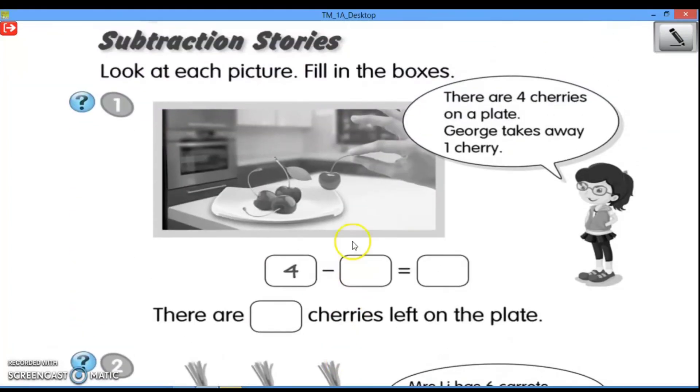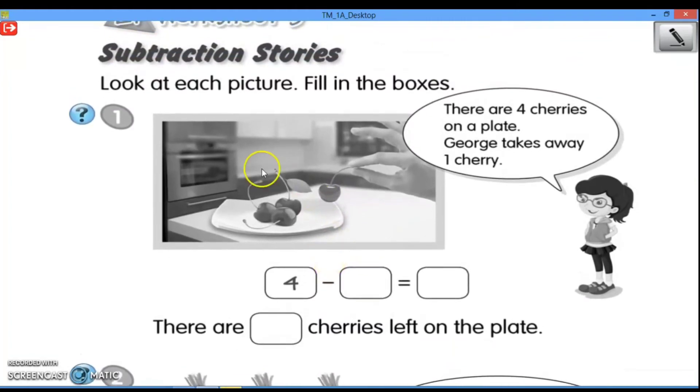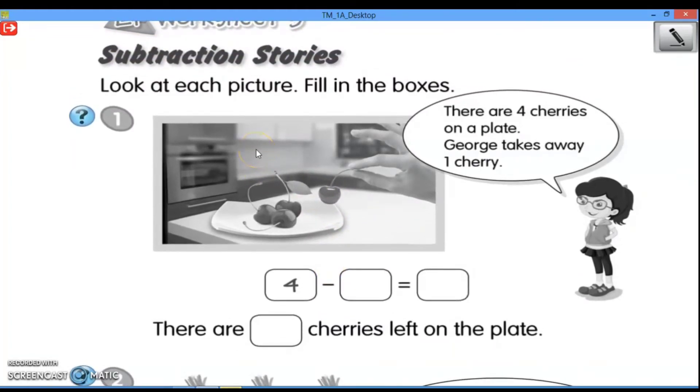Jadi, untuk di halaman 63, teman-teman ditugaskan untuk mengisi sesuai dengan subtraction stories yang ada. Nah, look at each picture. Fill in the box. Coba di sini nomor satu misalkan contohkan ya. There are four cherries on a plate. George take away one cherry.